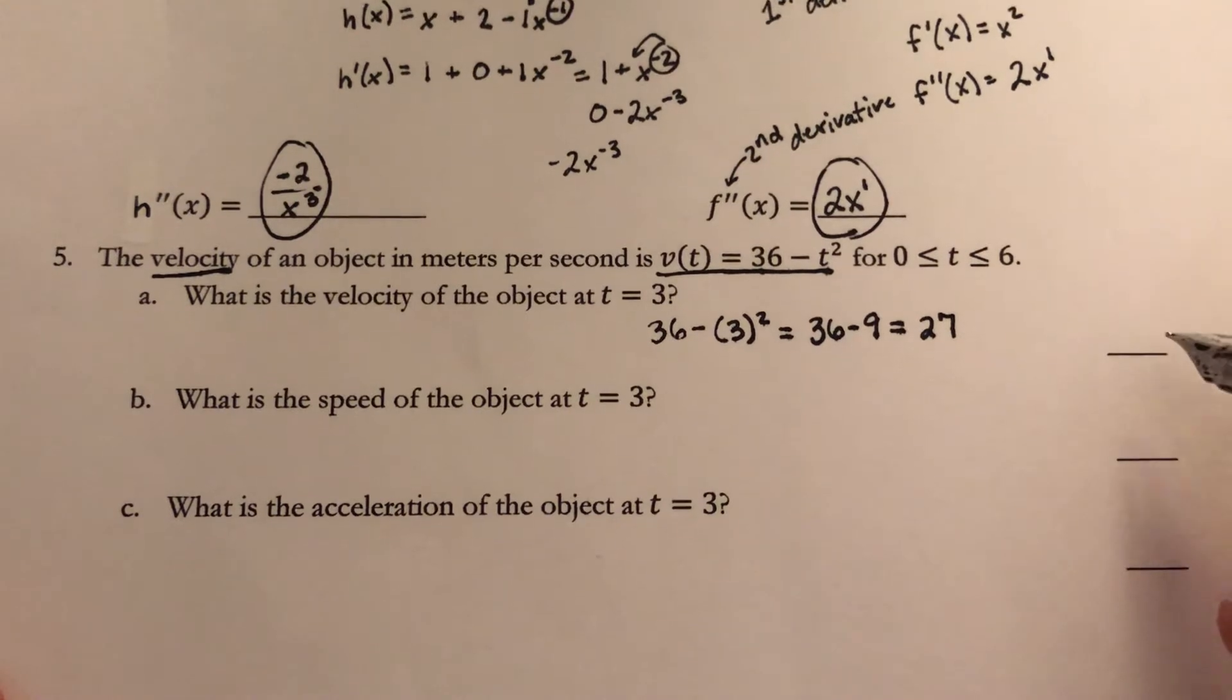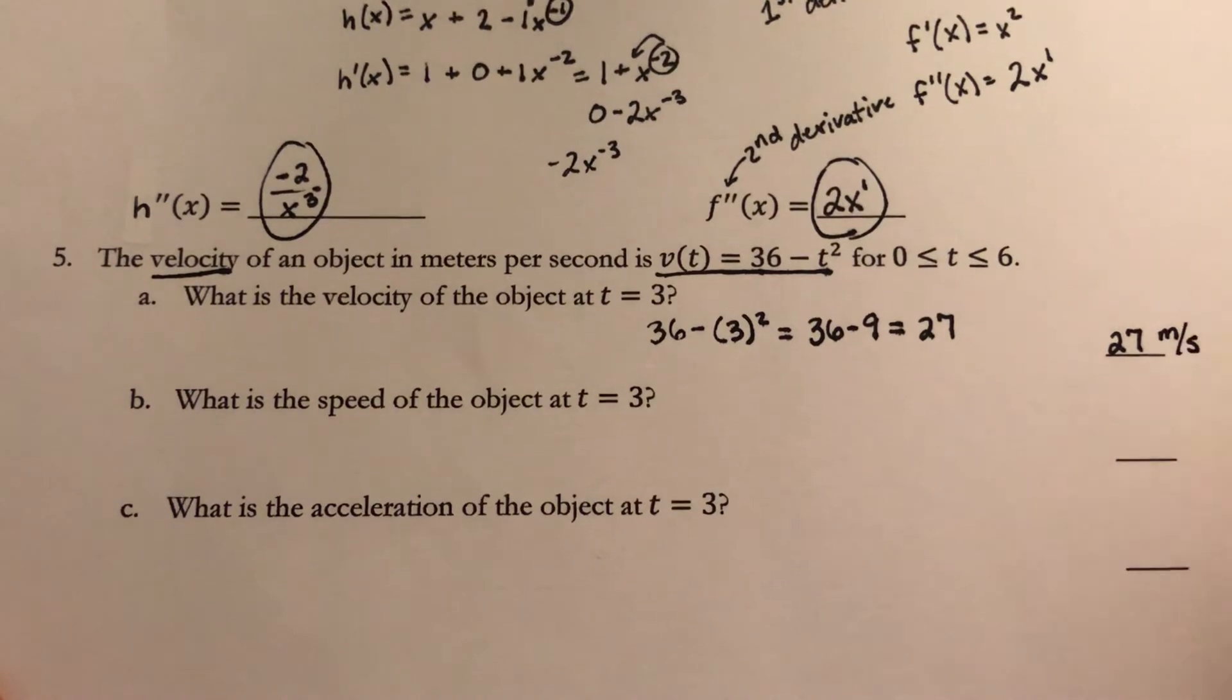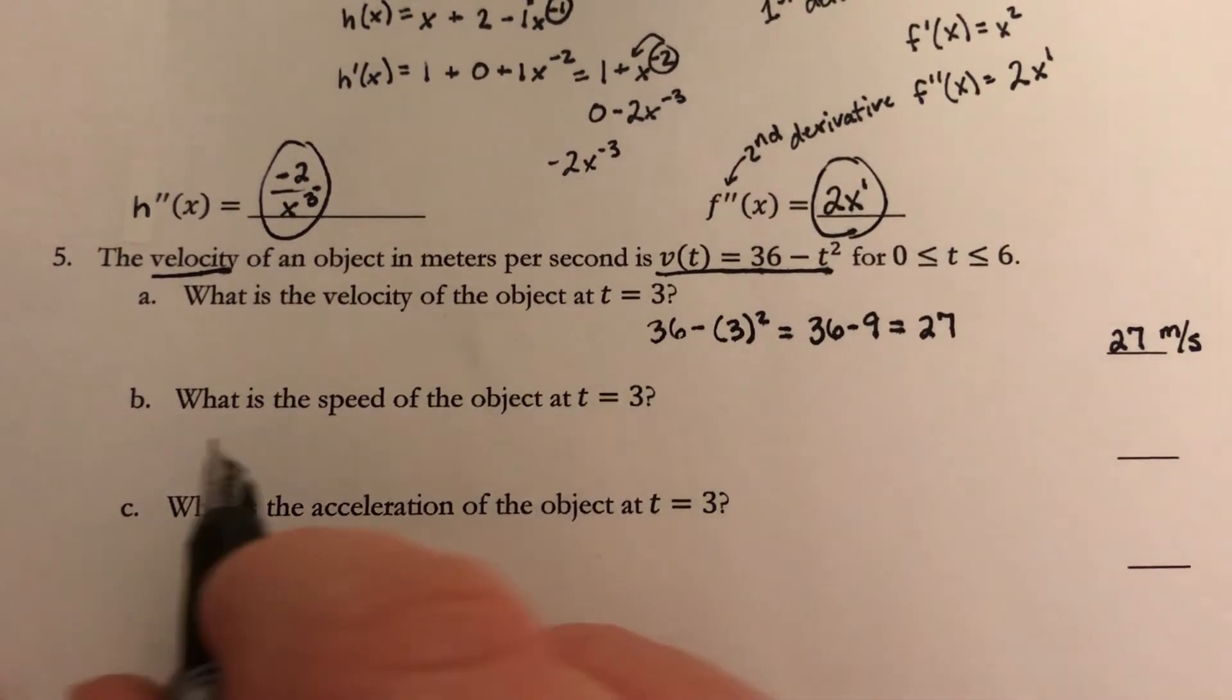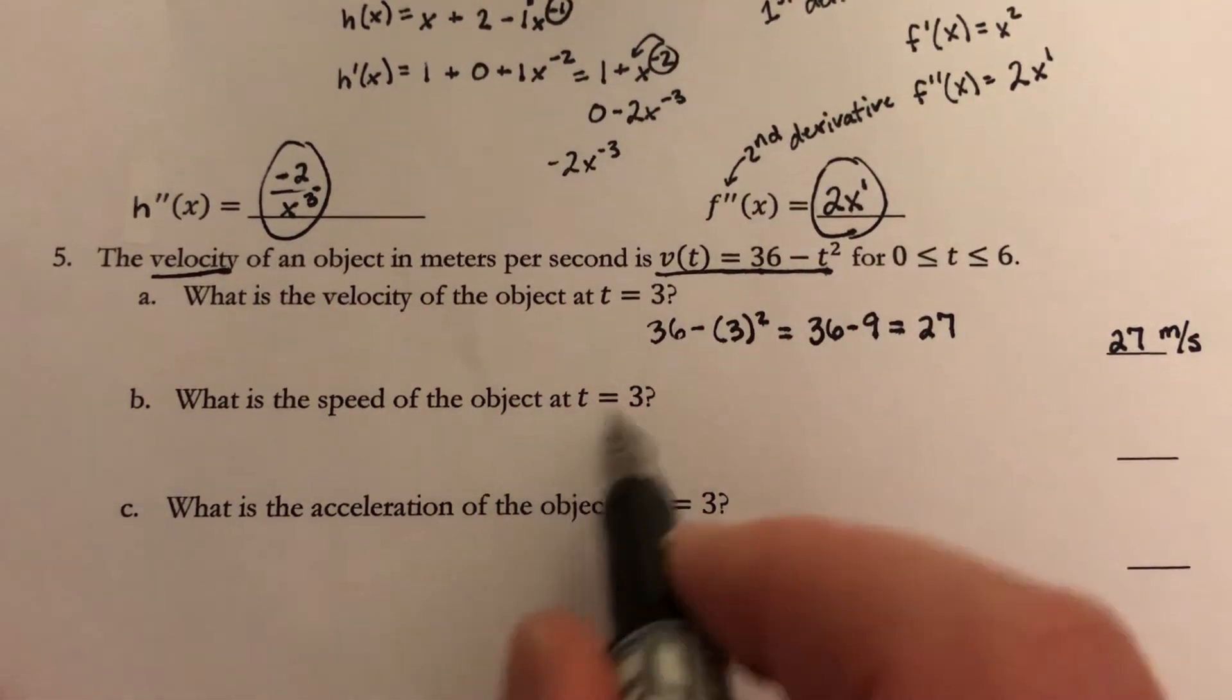I'm going to add in the units back here, so this is 27 meters per second. That tells me how fast it is traveling. The next question says, what is the speed of the object at t equals 3?